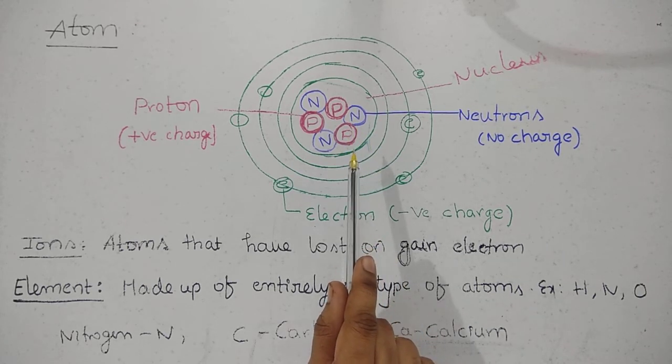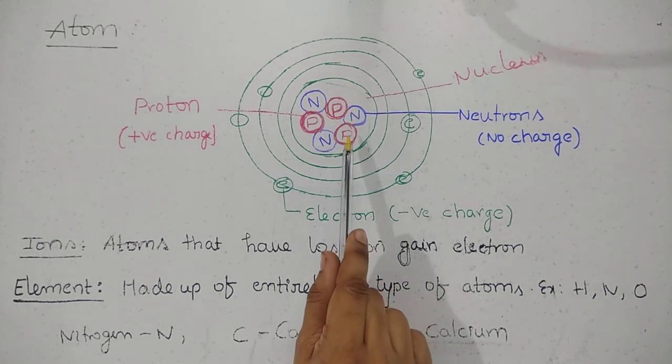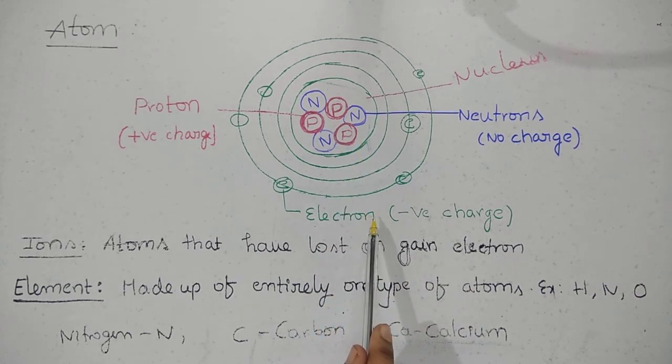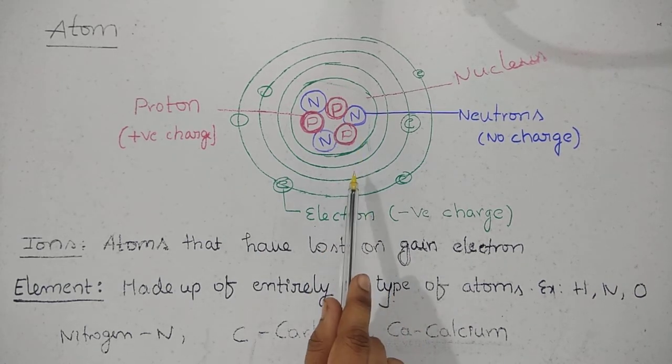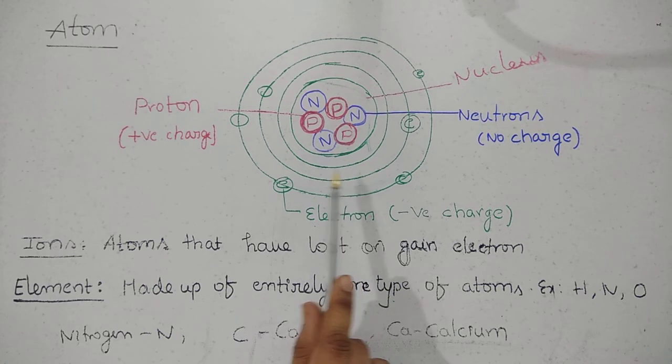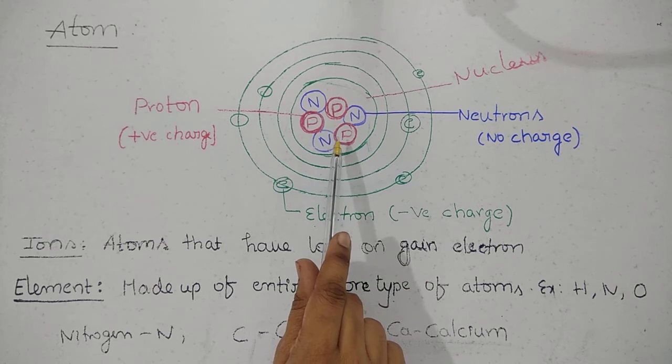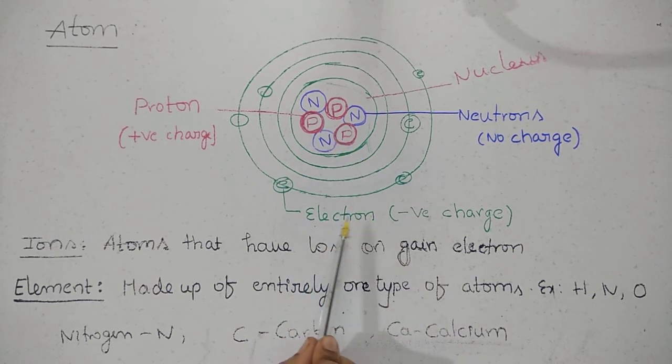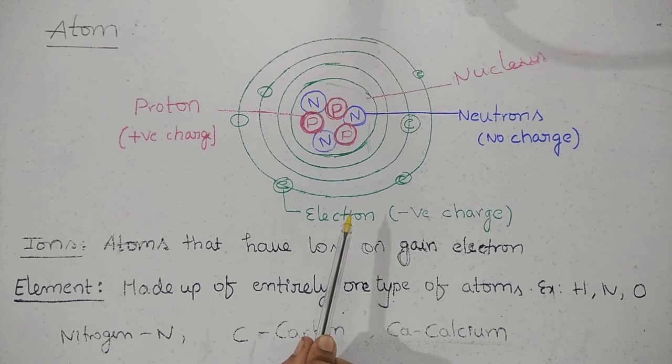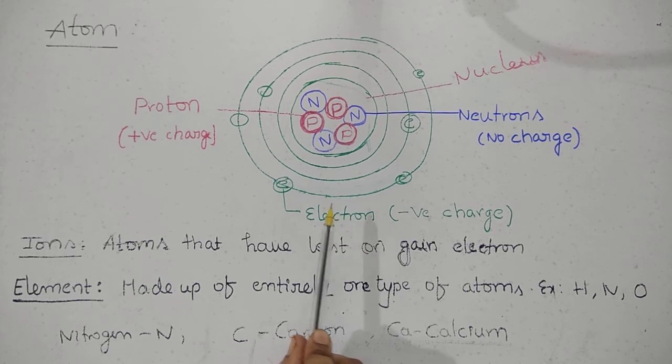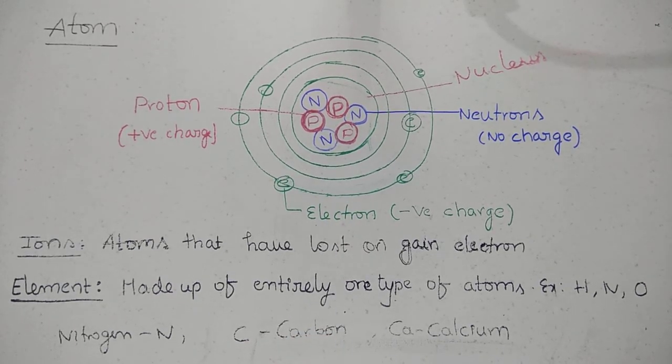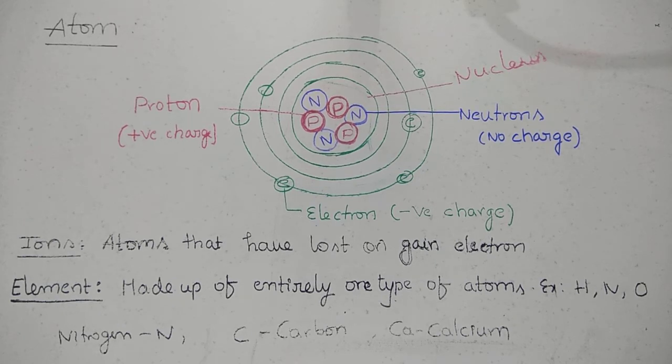Opposite charges are attracted. Atom is made up of three tiny particles: proton, neutron and electron. Okay, this is atom.